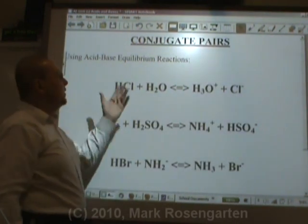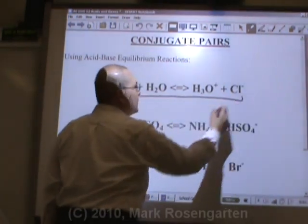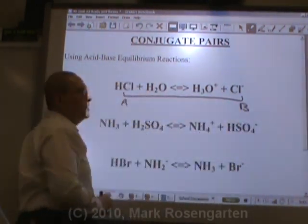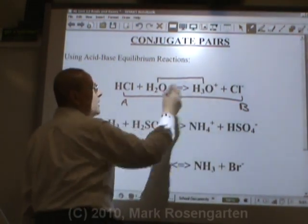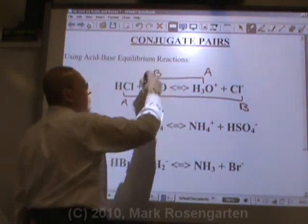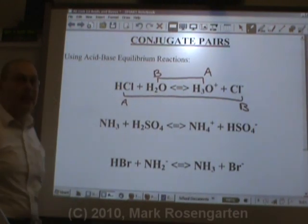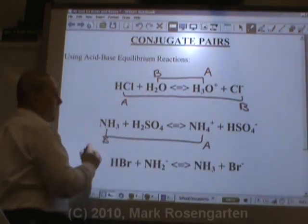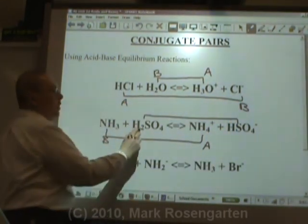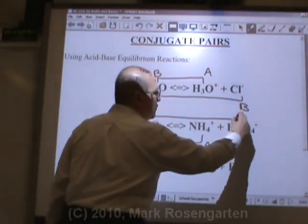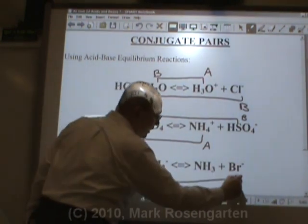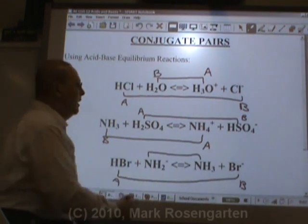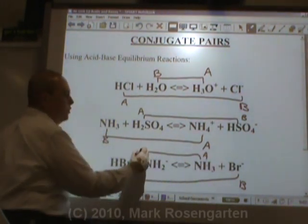Another way to find conjugate pairs is in reactions. HCl and Cl- are conjugate pairs — HCl has one more hydrogen, so it's the acid and Cl- is the conjugate base. H2O and H3O+ are conjugates — H3O+ has one more hydrogen, so it's the conjugate acid and H2O is the conjugate base. NH3 and NH4+ are conjugates — NH4+ has more hydrogen, so it's the acid. H2SO4 has one more hydrogen than HSO4-, making H2SO4 the acid and HSO4- the conjugate base. HBr and Br- are conjugate pairs. NH3 and NH2- are conjugates — NH3 is the acid because it has one more hydrogen, and NH2- is the base.